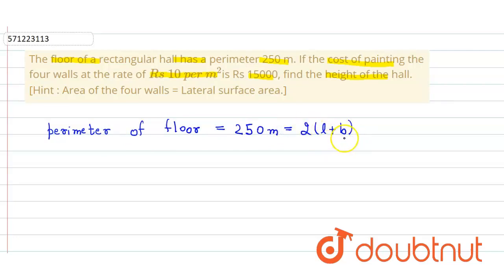We know that the cost of painting the four walls is equals to rate into curved surface area of cuboid.